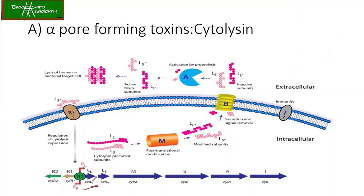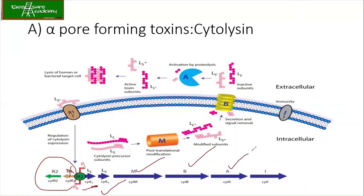Regarding regulation: when there is no target cell, there is no requirement for the large and small subunits of cytolysin to be produced — the expression will be closed. When a human target cell is detected, it triggers expression of these genes: M for modification, B for transporter, A for protease activity. I confers self-immunity — this is like a shield protecting the E. coli from its own cytolysin attack.